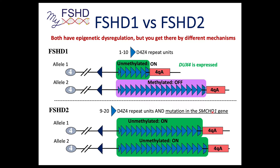There are some other rare FSHD2 genes — DNMT3B, LRIF1 — but more commonly, about 80% of the time, it's SMCHD1 gene mutations. You have the same end result: epigenetic dysregulation of the locus and DUX4 expression. You just get there a different way.